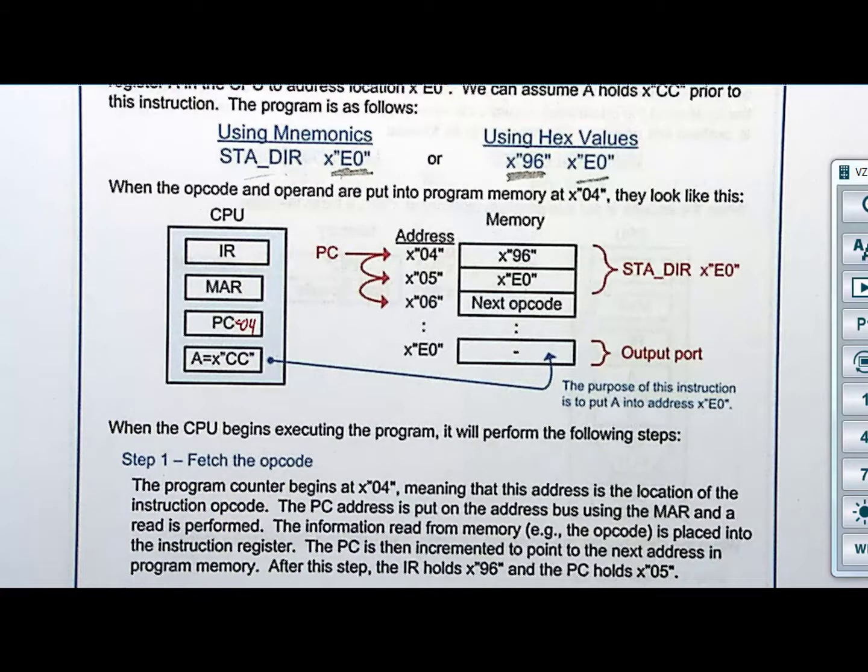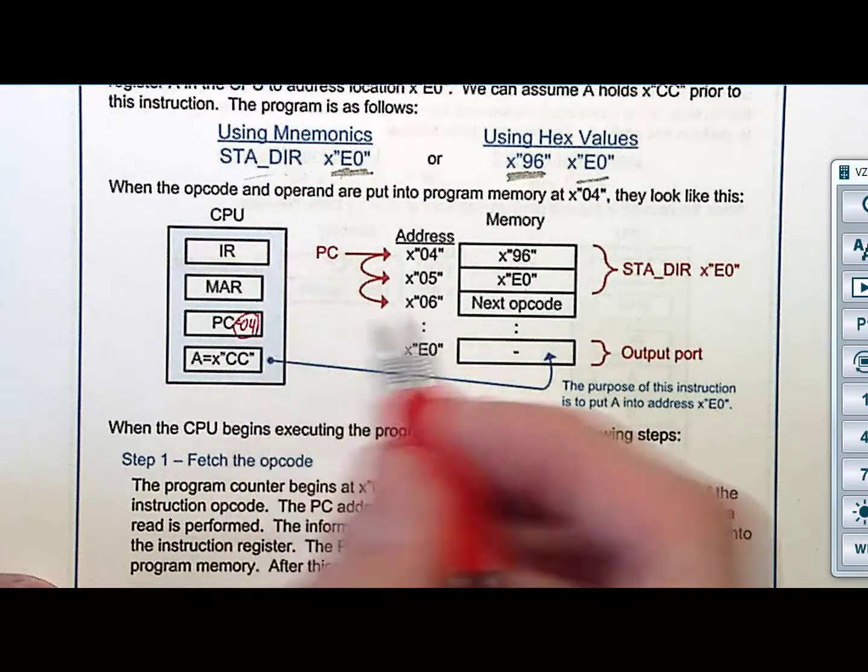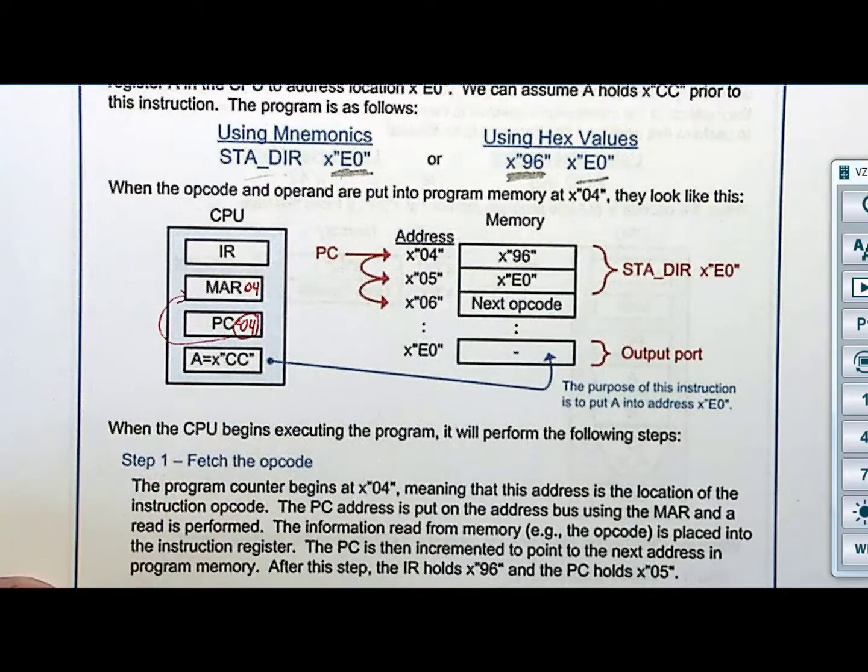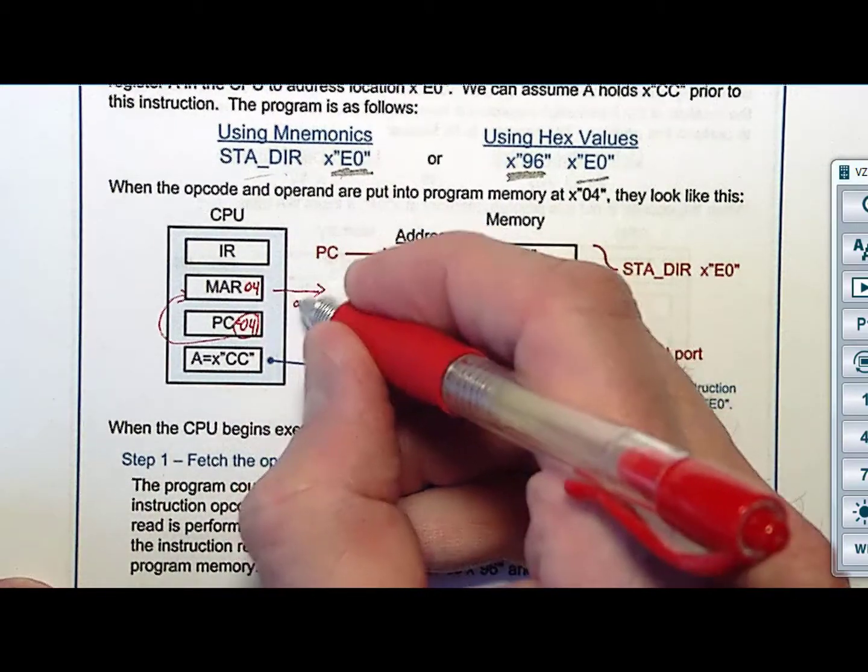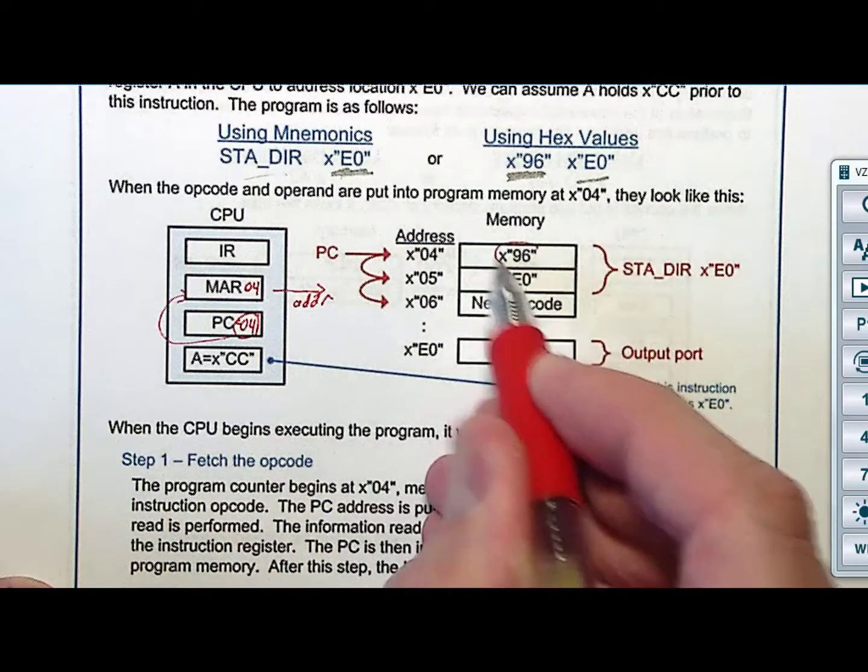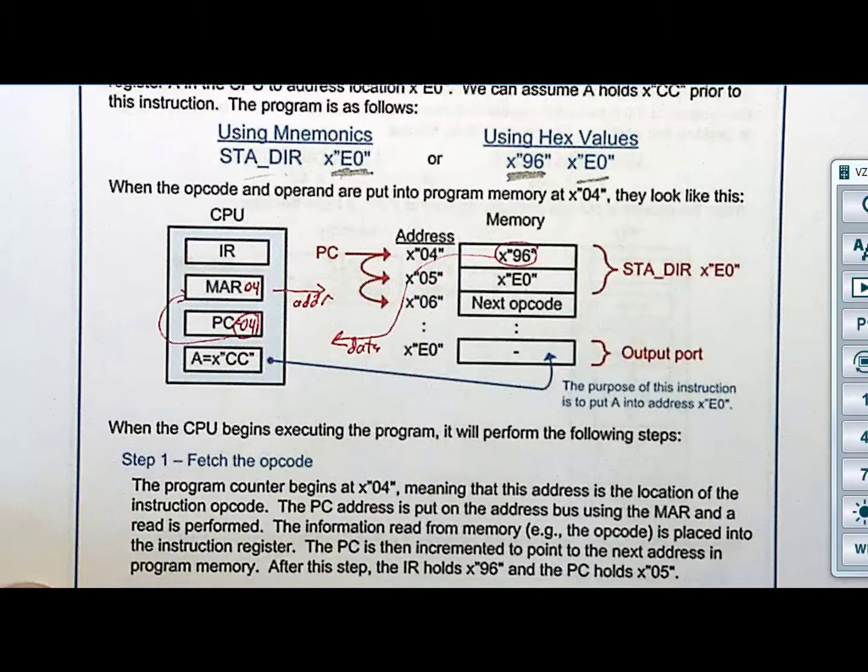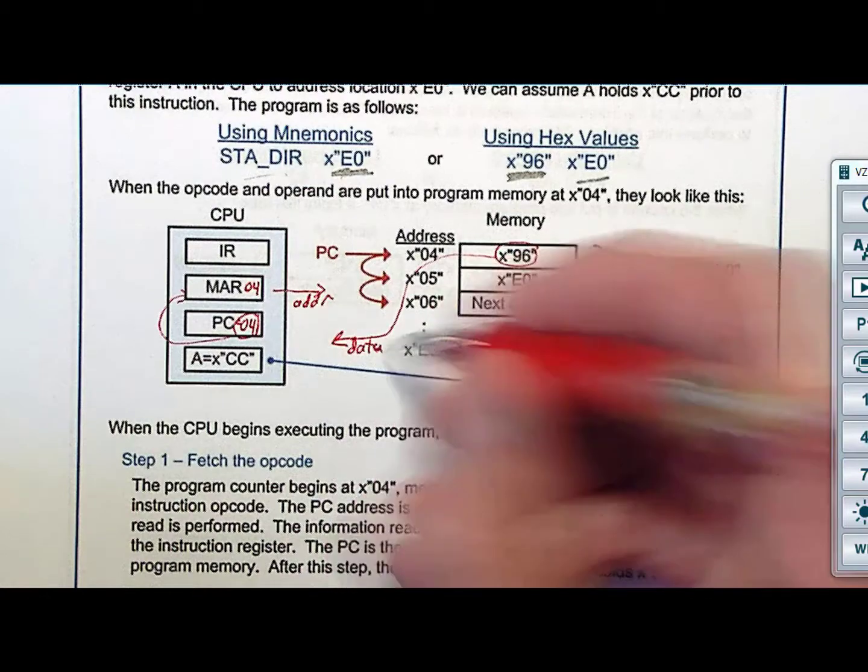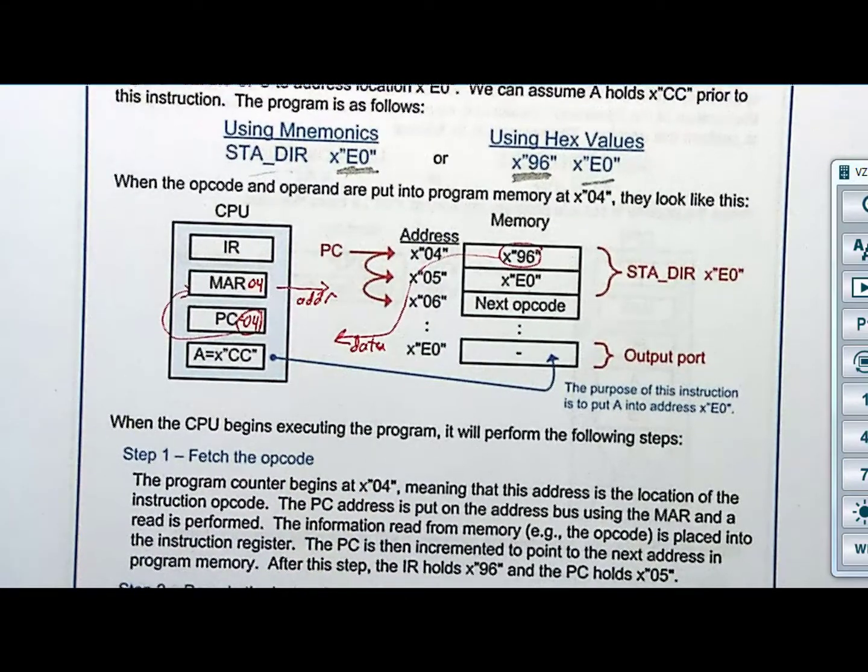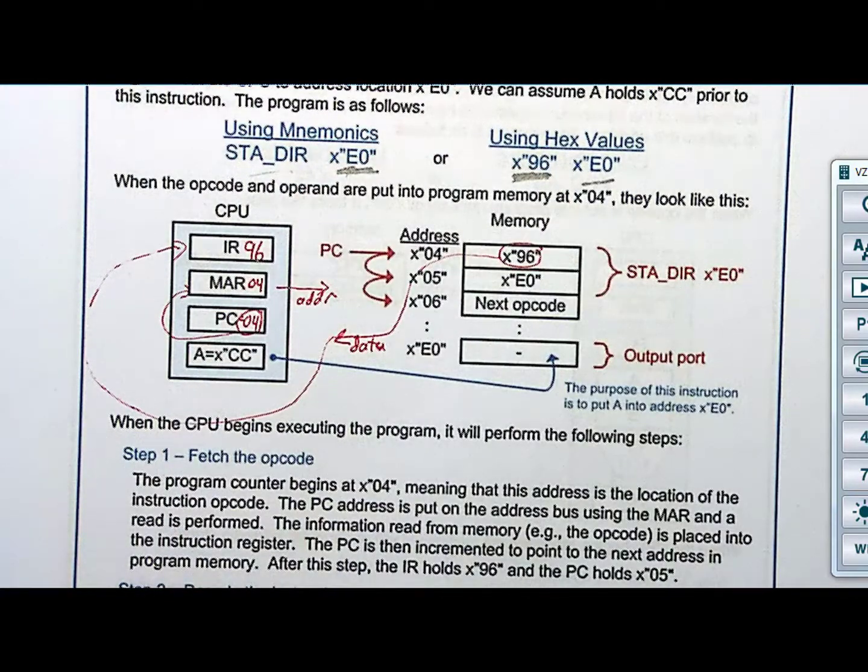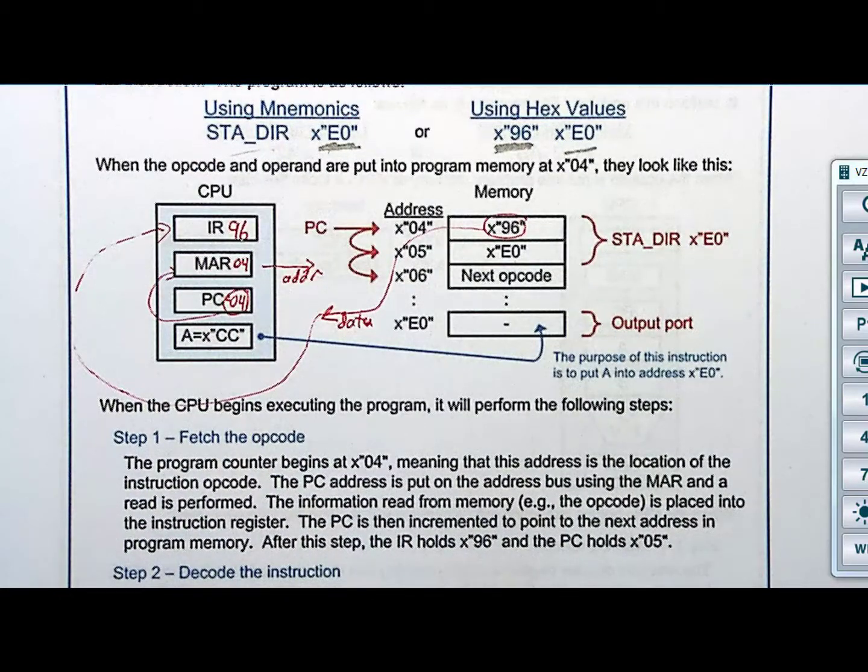I need to go get the op code. I don't even know what instruction I'm executing. So I'm going to take 04 and put it out on the address bus. So I'm going to put it into MAR. MAR now equals 04. That 04 is out on the address bus and I now can get 96. 96 is coming over on the data bus. And it is going to go where? Where should I put this code 96? I don't even know what it is. All I know it's an op code. IR.